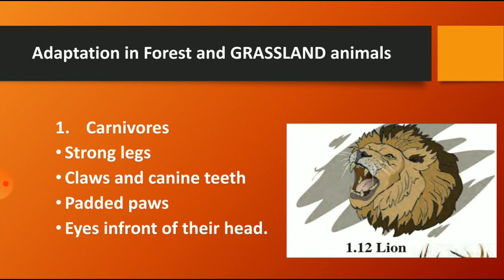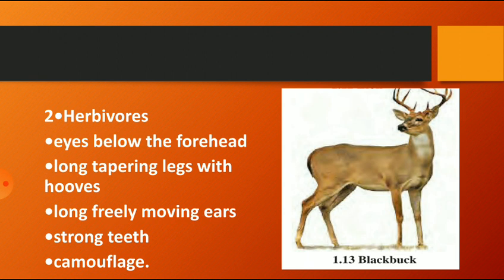The adaptations in herbivorous animals include eyes below the forehead, a long tapering snout with nostrils, long freely moving ears, strong teeth, and camouflage. These are the adaptations in grassland herbivorous animals. The blackbuck is the example for this.